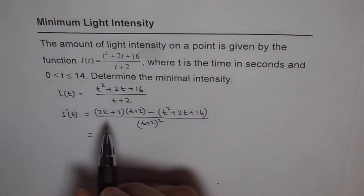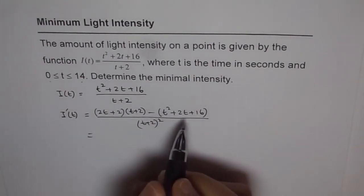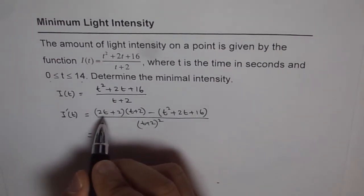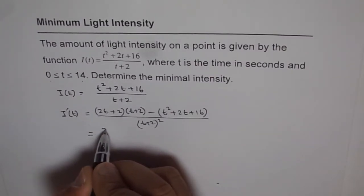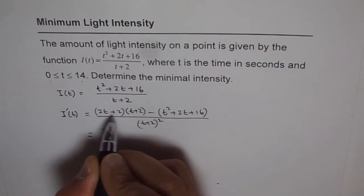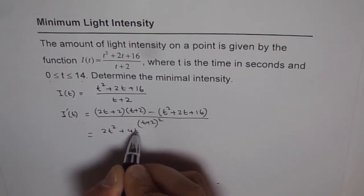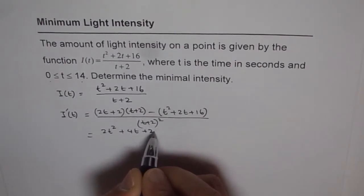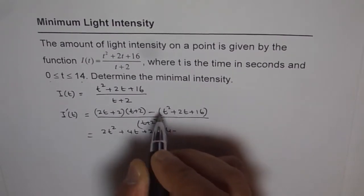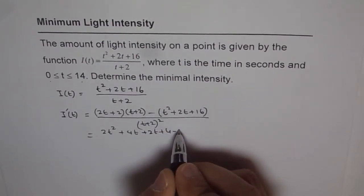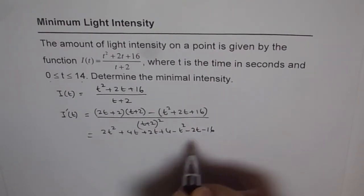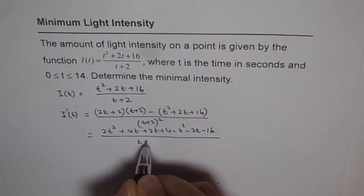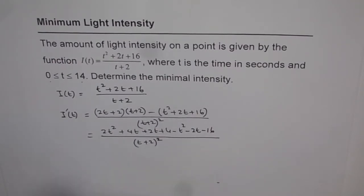So we can simplify by expanding and then we will factor. So, it is like t + 2, so we will just multiply. 2t + 2 is 2t² and this is plus 4t plus 2t plus 4 minus all this. So, minus t² minus 6t divided by (t + 2)².